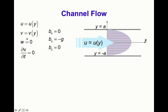We allow that u and a possible v component vary only as a function of y. In the third direction nothing is happening, so w equals zero. The flow is steady, meaning del V / del t equals zero. The only body force is gravity; if the channel is horizontal with y as the vertical direction, then b_y equals minus g.